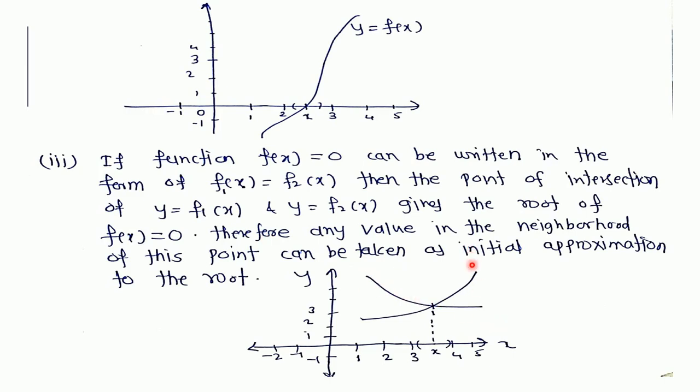Assume this is the graph of f1(x) and this is the graph of f2(x). The point of intersection of these two graphs is point x. We can take any point in the neighborhood of this x as the best initial approximation or initial guess to the root.